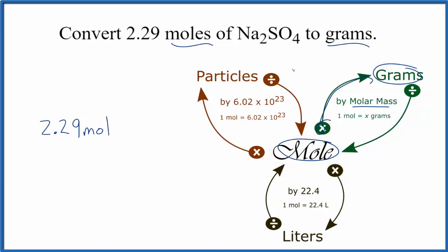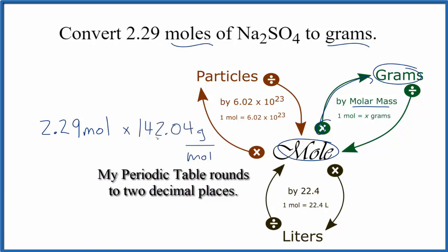And we find the molar mass for sodium sulfate by going to the periodic table and adding up the masses of the individual atoms. When we do that, we get 142.04 grams per mole.